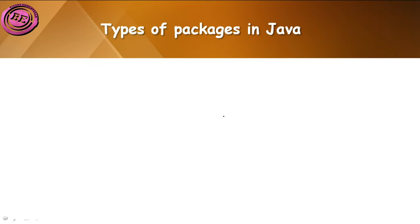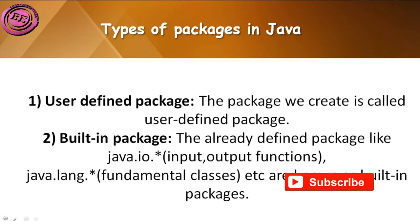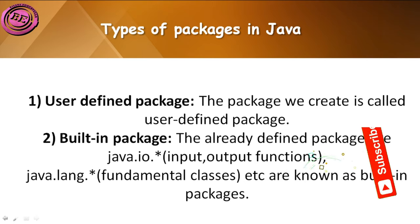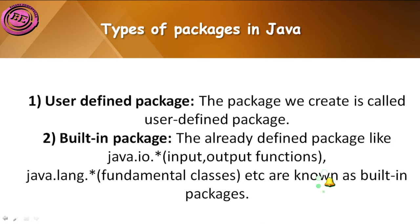Coming to the types of packages in Java, we have two different types: one is the built-in package and the second is the user-defined package. The package we create is known as a user-defined package — that means when a user creates a package, that particular package is known as a user-defined package. The already defined packages like java.io, java.lang, java.awt, java.math, java.applet etc. are known as built-in packages, and they are created when we install Java software.